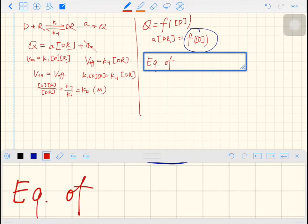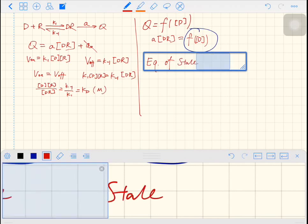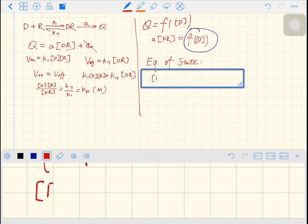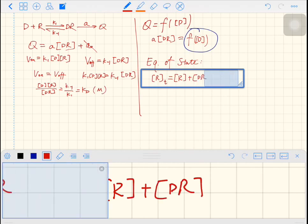Are you excited? We now need equations of states. Equations of states. We have the total number of receptors, RT equals R plus DR. Why? Because the receptors are in two forms, in the free form, which is R, and in the binding form with drug, which is DR.